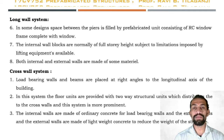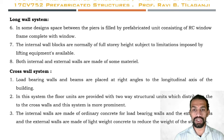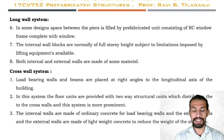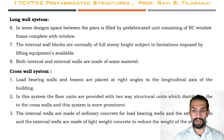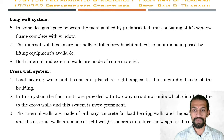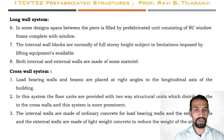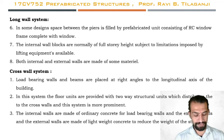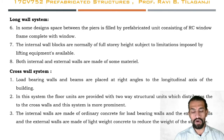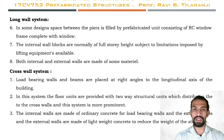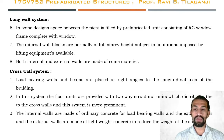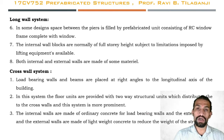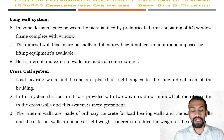In the cross wall system, load bearing walls and beams are placed at right angles, perpendicular to the longitudinal axis of the building. Floor units are provided as two-way structural units distributing loads to the cross walls, making this system more prominent. Internal walls are made of ordinary concrete or load bearing materials, while external walls are made of lightweight concrete to reduce the dead load of the structure.